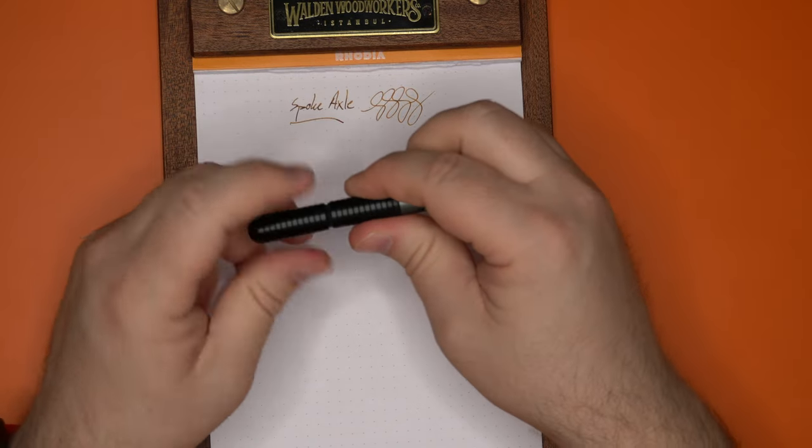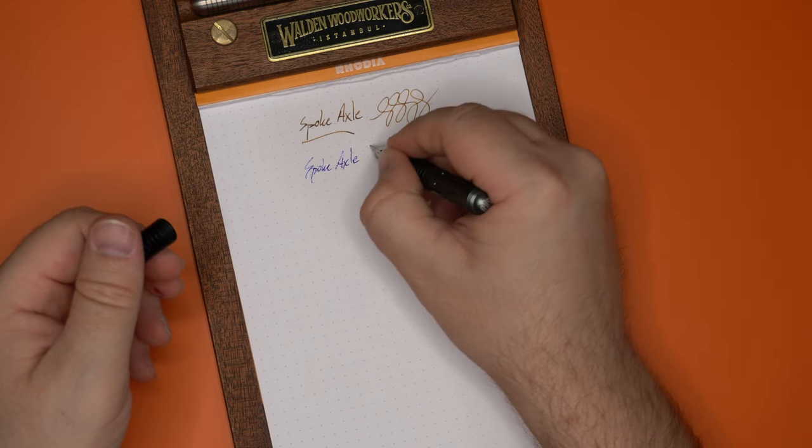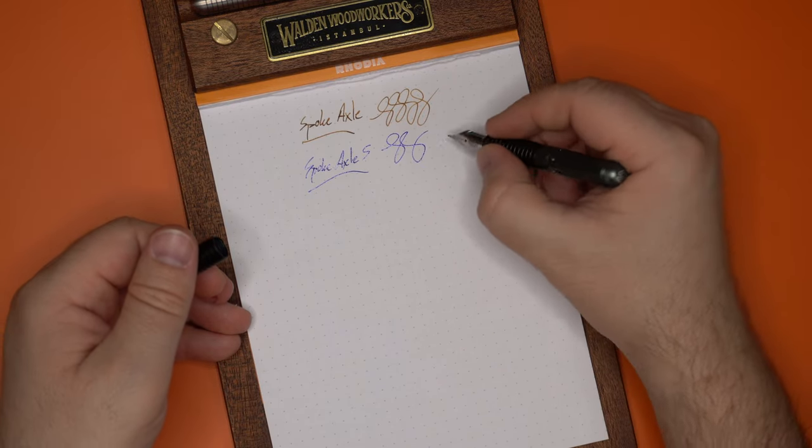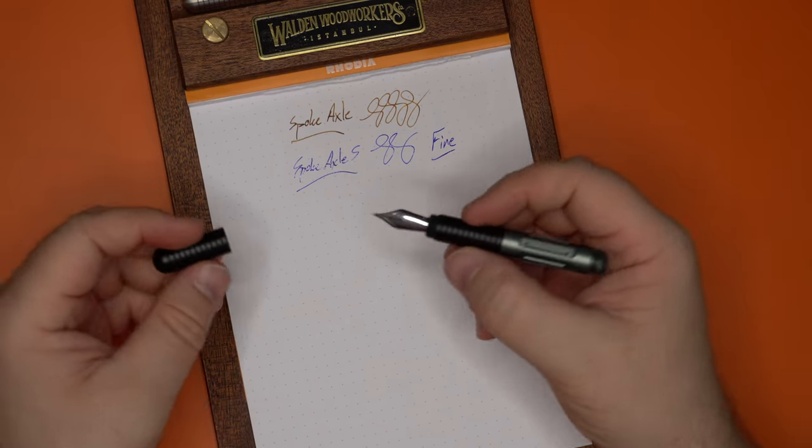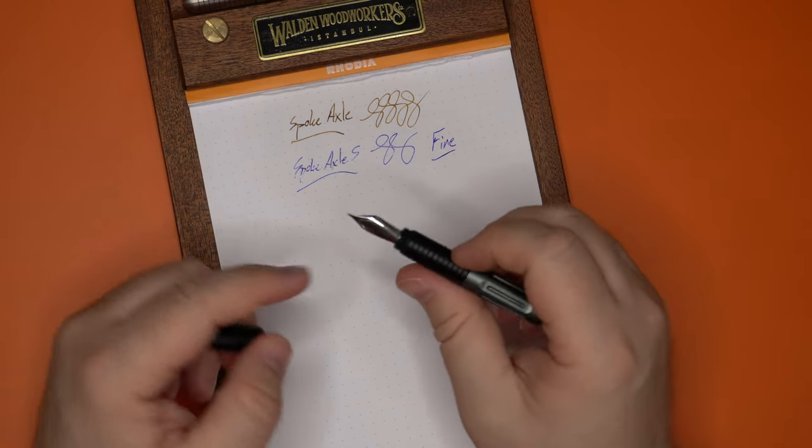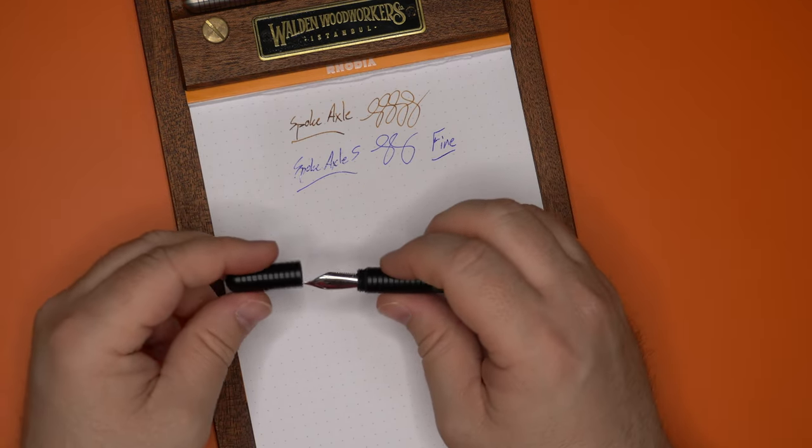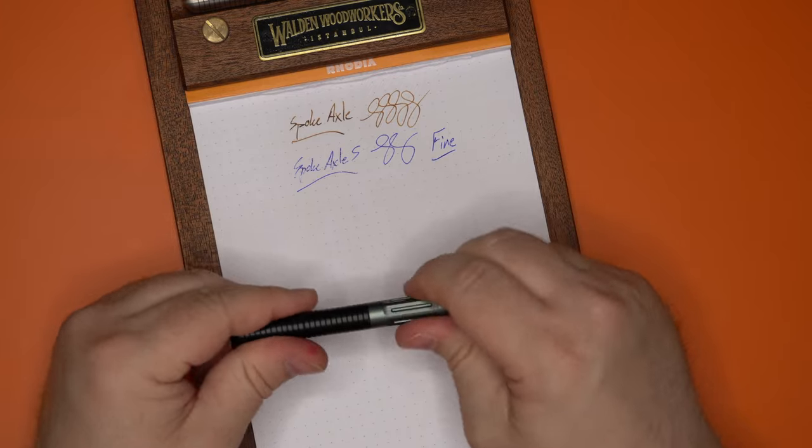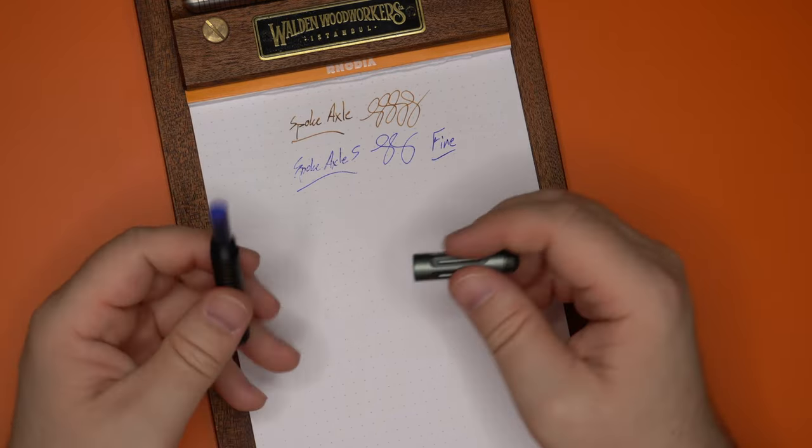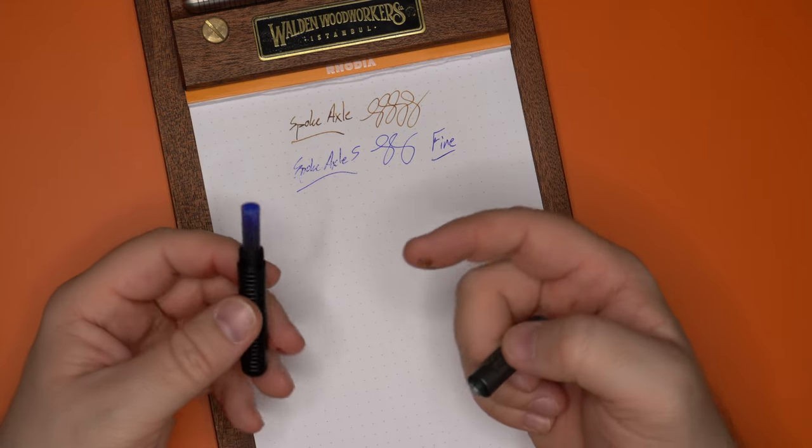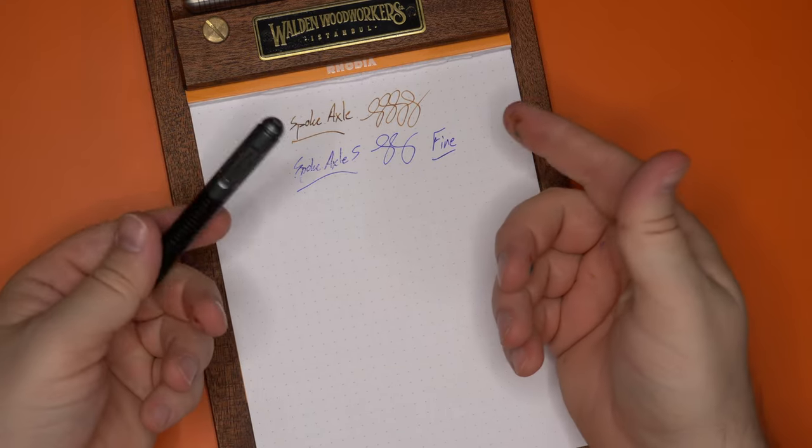Let's see how its smaller Axle S sibling does. Yeah, no problem here either. This is a fine nib on this one, which I kind of prefer in a pocket pen, because you never know what you're going to be writing on. And a fine nib can be a little bit more reliable on bad papers than a wider nib. So yeah, really nice. And this one's, by the way, just running on a cartridge. I think this is probably the blue cartridge it came with. I just probably popped that right in there with no problem.